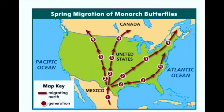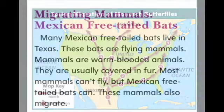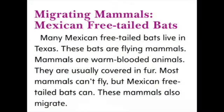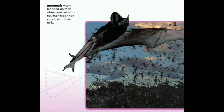Migrating mammals: Mexican free-tailed bats. Many Mexican free-tailed bats live in Texas. These bats are flying mammals. Mammals are warm-blooded animals usually covered in fur. Most mammals can't fly, but Mexican free-tailed bats can. These mammals also migrate.